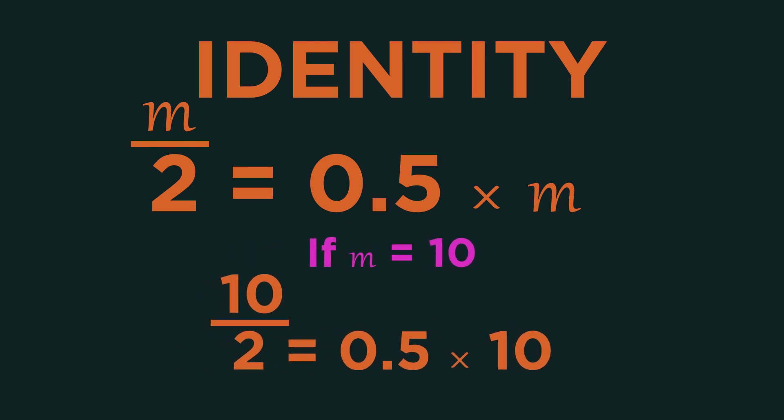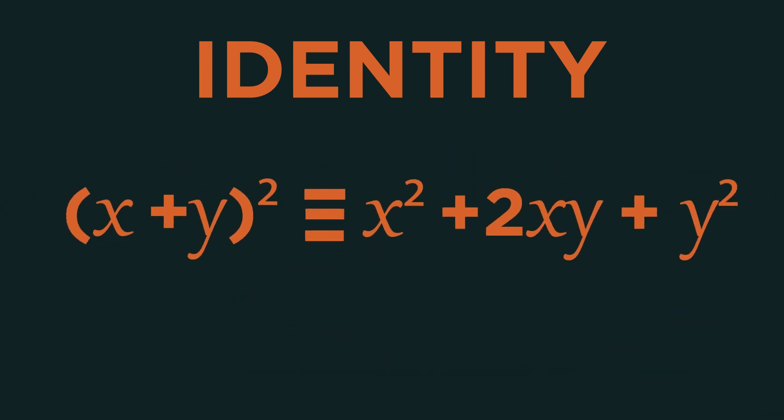This is an identity because whatever value is chosen for m the identity is true. This is also an identity.